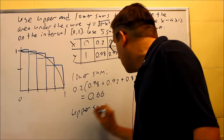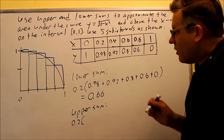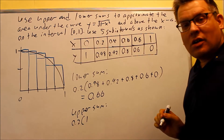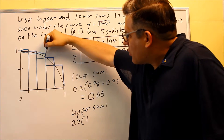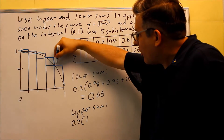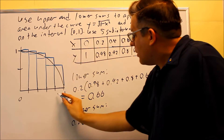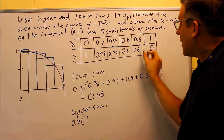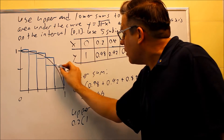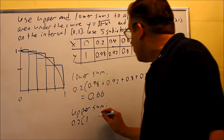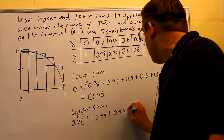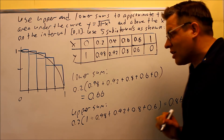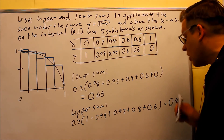Now for the upper sum, the width is also 0.2. This time the height starts at x equals 0, so I put 1 in there as my first height. I'm going to use all the y values from the table. The very last rectangle's height is determined at x equals 0.8, not at 1. So I have heights: 1, 0.98, 0.92, 0.8, and 0.6. Calculating all of that gives us 0.86. So the actual area is going to be between 0.66 and 0.86.